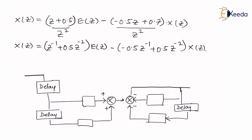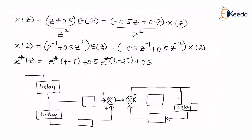If I take the inverse Z-transform, I will get X*(t) equal to E*(t minus T) plus 0.5 times E*(t minus T), minus 0.5 times X*(t minus T) — noting that the minus and plus become minus — that is minus 0.7 times X*(t minus 2T).